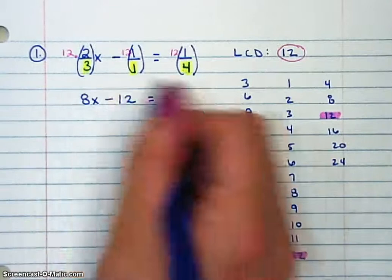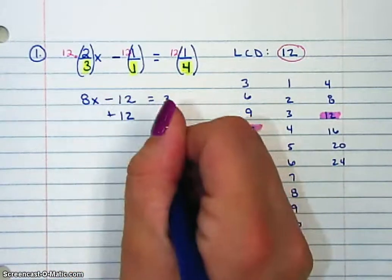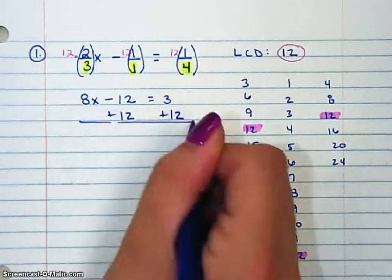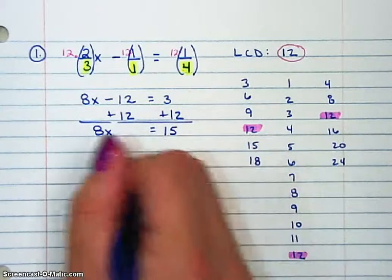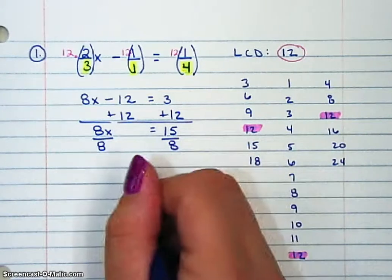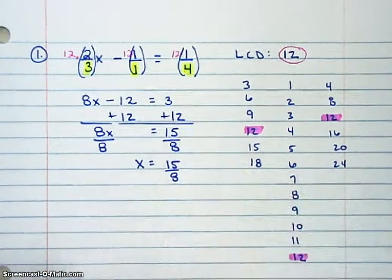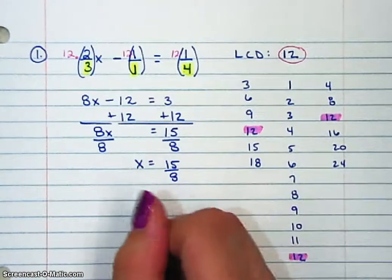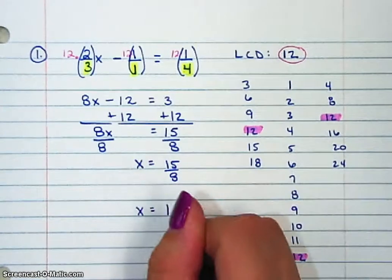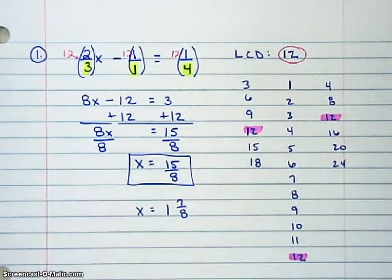So now this is a much simpler problem to solve — they're all integers. 12 times negative 1 is minus 12, and 12 times 1 fourth is 3. All we have to do is add 12 to both sides, so 8x equals 15. Then divide by 8, so x equals 15 over 8. Because we started with fractions, we want to end with fractions. You can also write this as 1 and 7 eighths, but the improper fraction works just fine. So there's number 1.